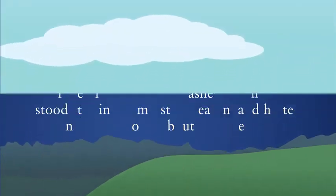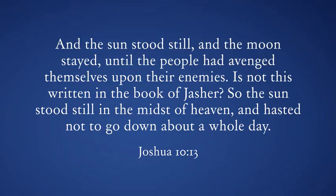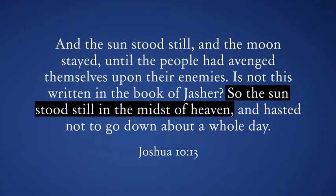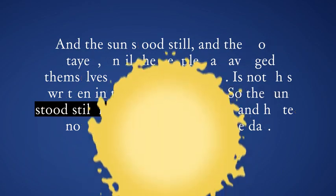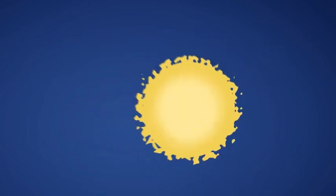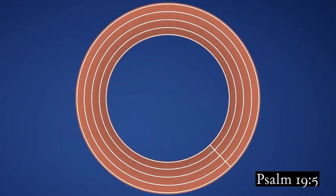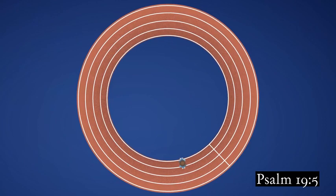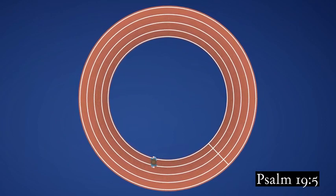During his battle with the Amorites, Joshua did not bid the earth but the sun to stand still. David likewise understood that it is the sun which moves. He likened the sun to a strong man running a race, who untiringly circuits the heavenly track above.